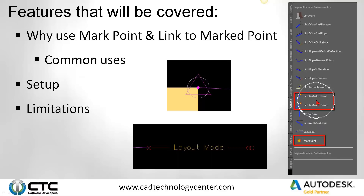I did a couple screen caps: link to mark point, link to mark point two, and then the mark point. We've got a decent sized group here. I have looked through this and I have not been able to find any difference between link to mark point and link to mark point two, besides the two at the end of the second one. If anyone does know the difference, I'd be willing to listen and I'll give you a shout out. With our code set style that we use by default, a mark point shows up as a triangle, and this is what a link to mark point looks like in our code set styles. Obviously based off your code set styles, you can make these things look different.